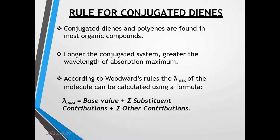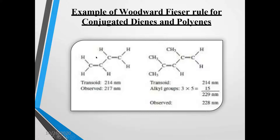For example, in case of 1,3-butadiene, there are 4 carbon atoms and the 2 double bonds are situated at conjugated position — double bond, single bond, double bond. This kind of structure is considered as the basic structure for diene system, and any substituents which are attached to this basic structure will be added to get the lambda max value for that particular compound.